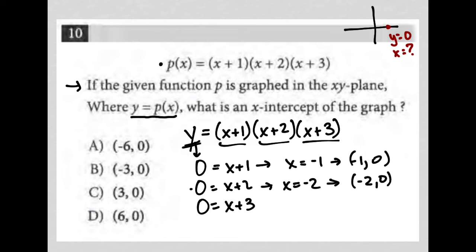And for the last one, I can subtract 3 from both sides, leaving me with x equals negative 3, or a negative 3, comma 0 as the x-intercept.